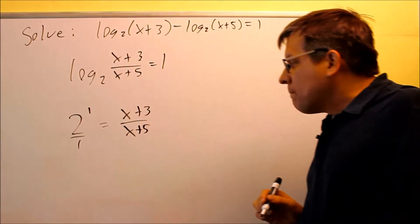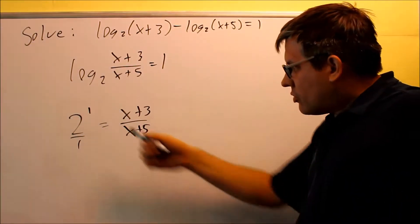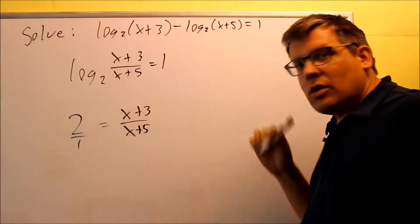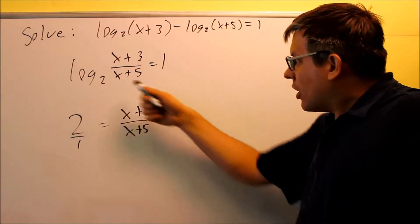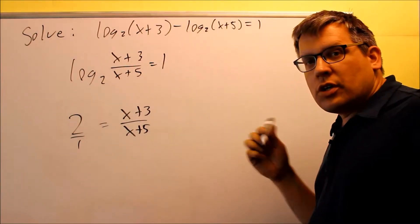Then I have a 1 down below here. So really, 2 to the first power essentially is just going to be 2. So again, anything raised to the first power would be itself.